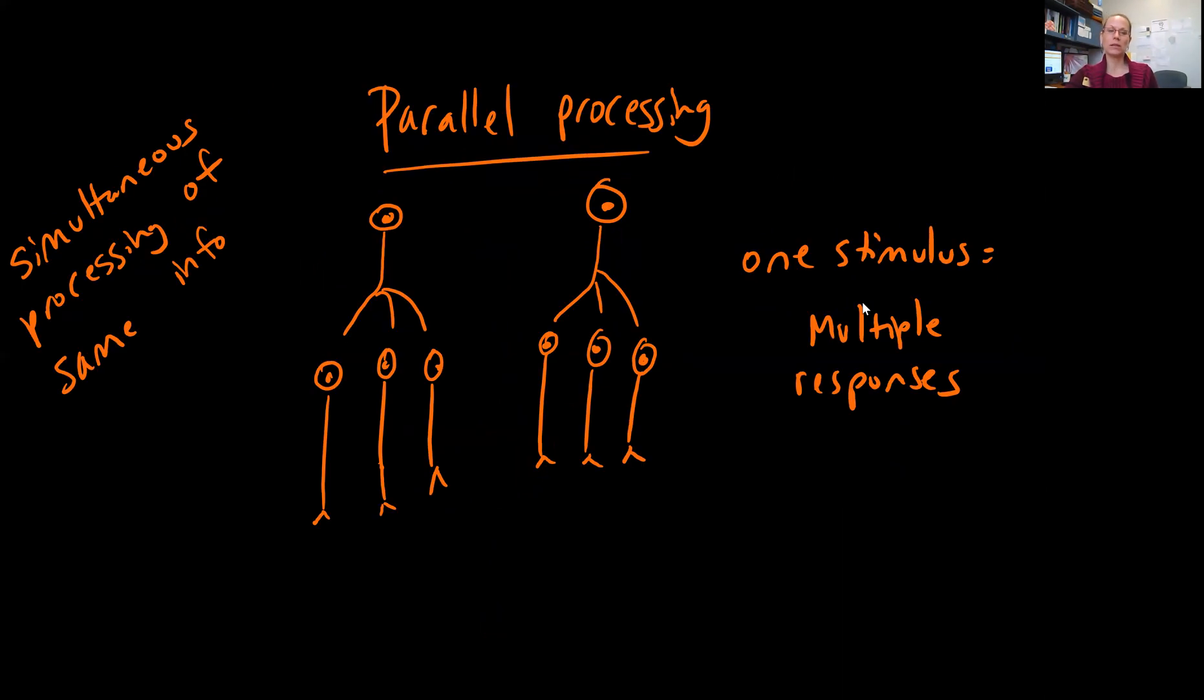Parallel processing is simultaneous processing of the same information—one stimulus, but multiple responses. For example, stepping on a nail: you might switch feet, picking your left foot up and putting your right foot down. You may say 'ow' or some other colorful language. You may check out your surroundings, look at your foot, and so forth. So you have several responses to one stimulus.